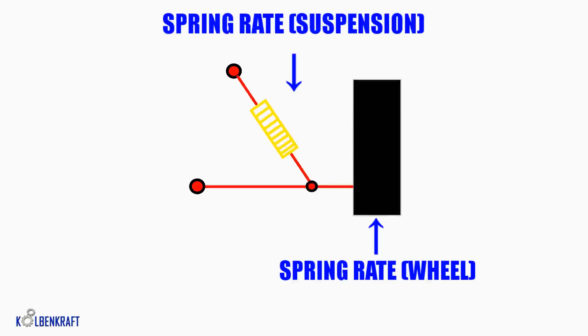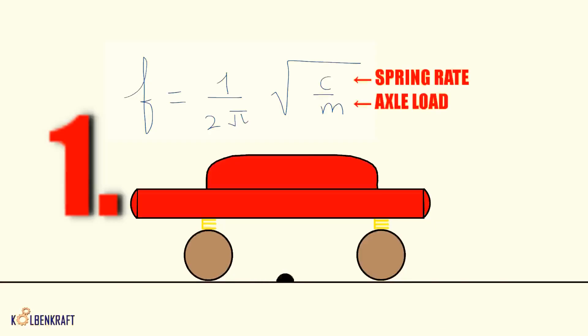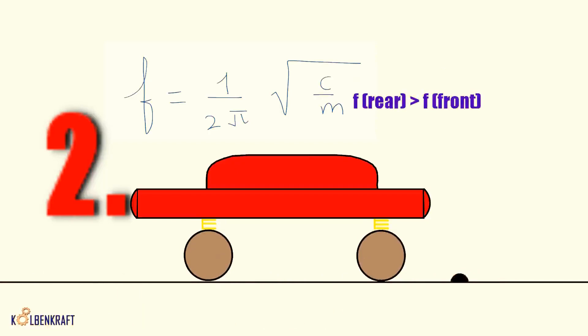For a given amount of frequency and axle load, we can achieve the spring rate. The frequency of the rear wheels has to be greater than the front wheels. We need to select such a spring rate and frequency so that it provides better passenger comfort and also does not lead to an oversteer.